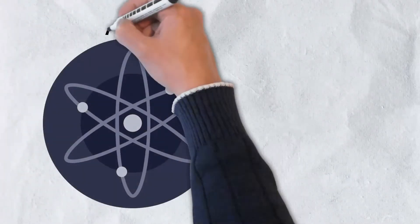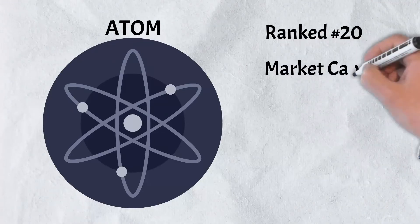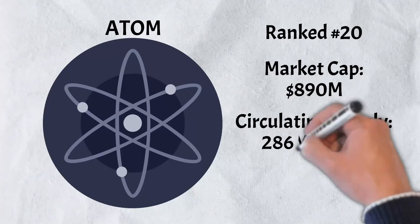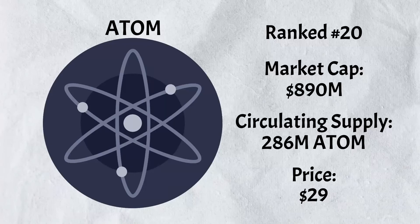At the time of this video, Cosmos is the 20th largest cryptocurrency in market cap at nearly $890 million. It has a circulating supply of nearly $286 million Atom and is trading close to $29.